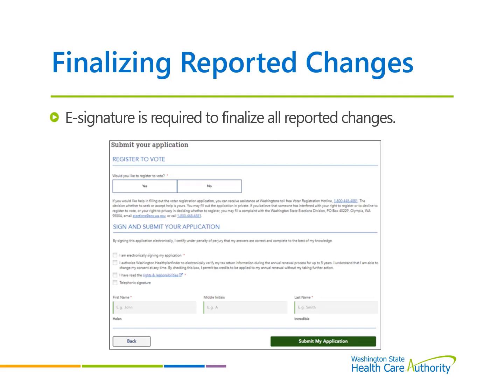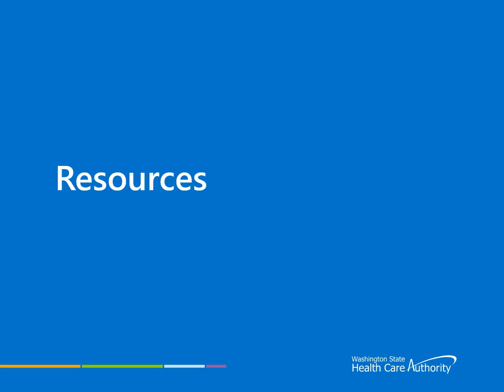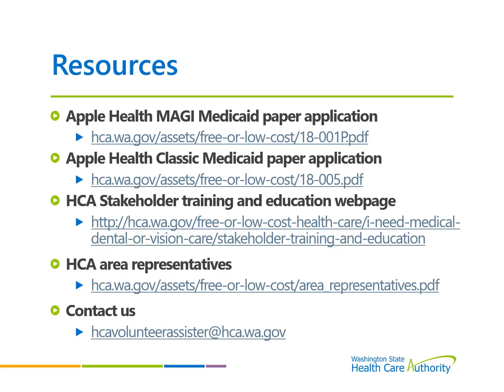An e-signature is required to finalize all changes. Once completed with changes, proceed through the application to the e-signature page to sign and submit the reported changes. For additional resources and materials regarding Apple Health Programs, please visit the Health Care Authority's Training and Education Web Page. For community partners, the Health Care Authority has made available a team of eligibility policy representatives to provide assistance for questions regarding eligibility and assistance with Washington Health Plan Finder applications. These representatives serve specific counties. For more information about the Washington Volunteer Assister Program, contact us at hcavolunteersister@hca.wa.gov.